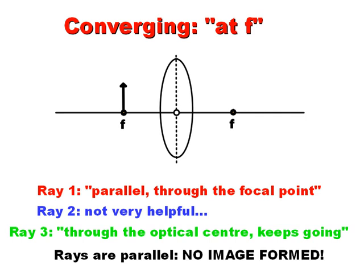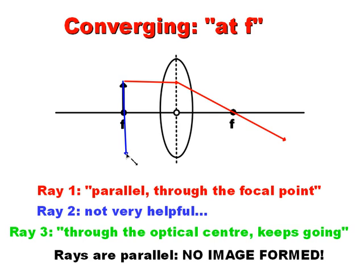Now let's look at a situation where we put our object right at F. Same kind of story: parallel through the focal point. The second ray gives us trouble — going from the top of the object through the focal point, it will never hit the lens. The third ray through the optical center shows that these two rays are parallel — they're never going to meet. So you get no image when the object is at the focal point of the converging lens.